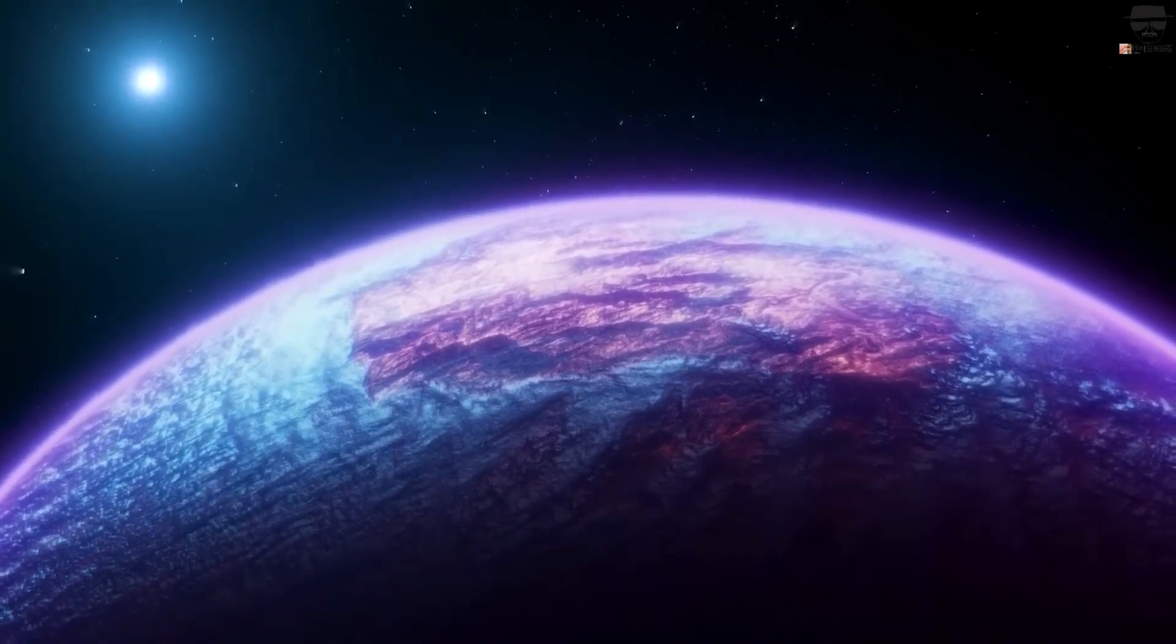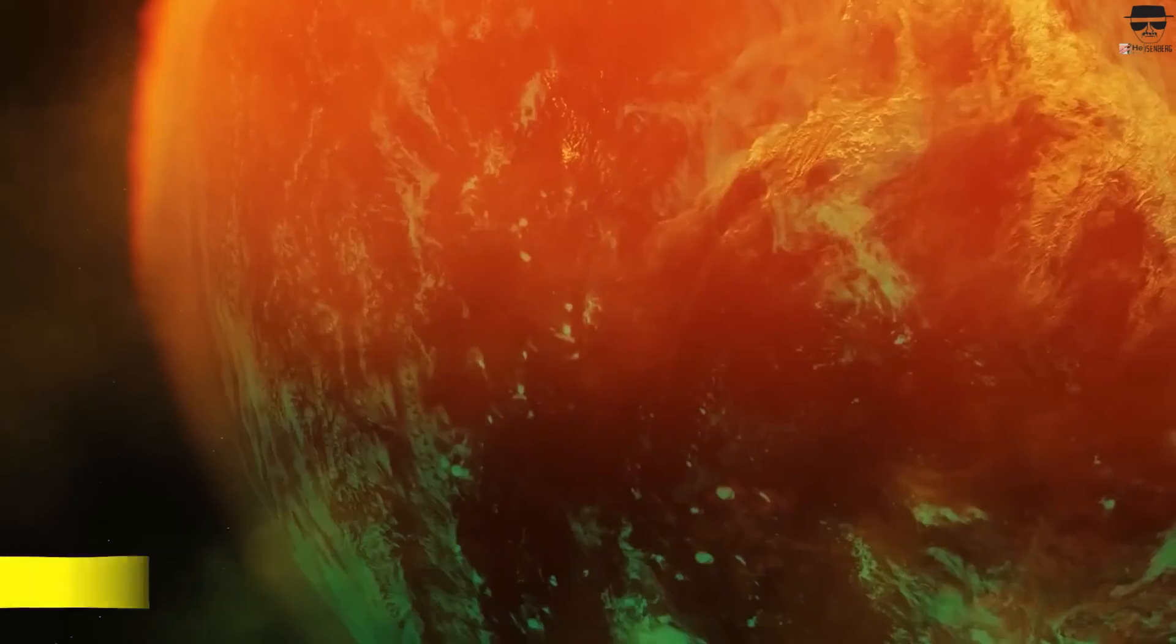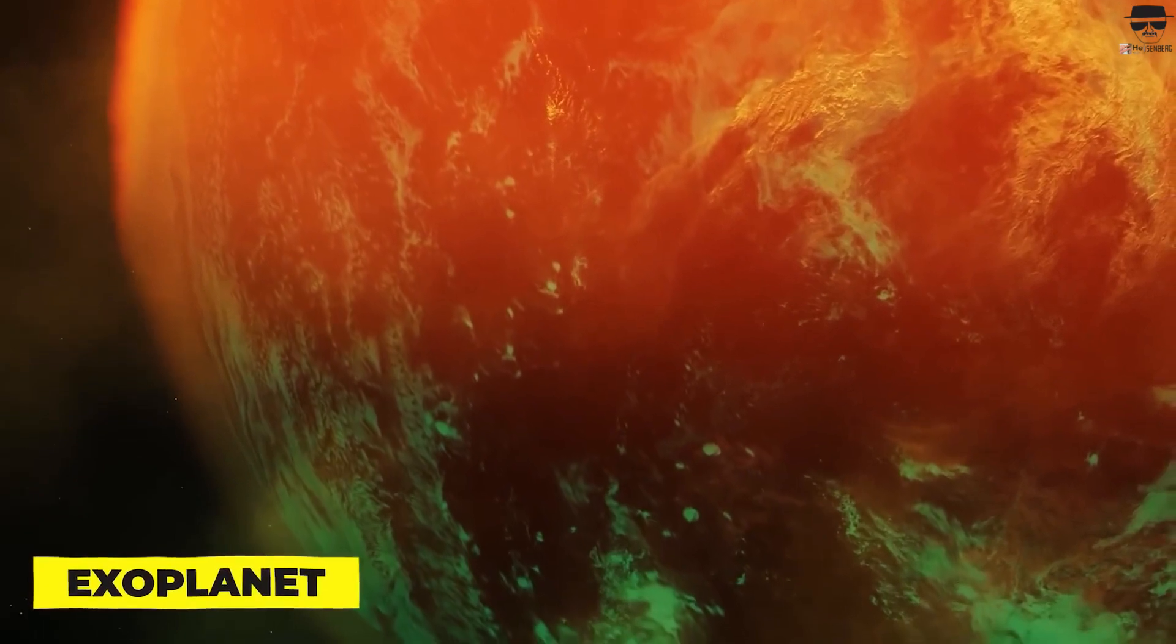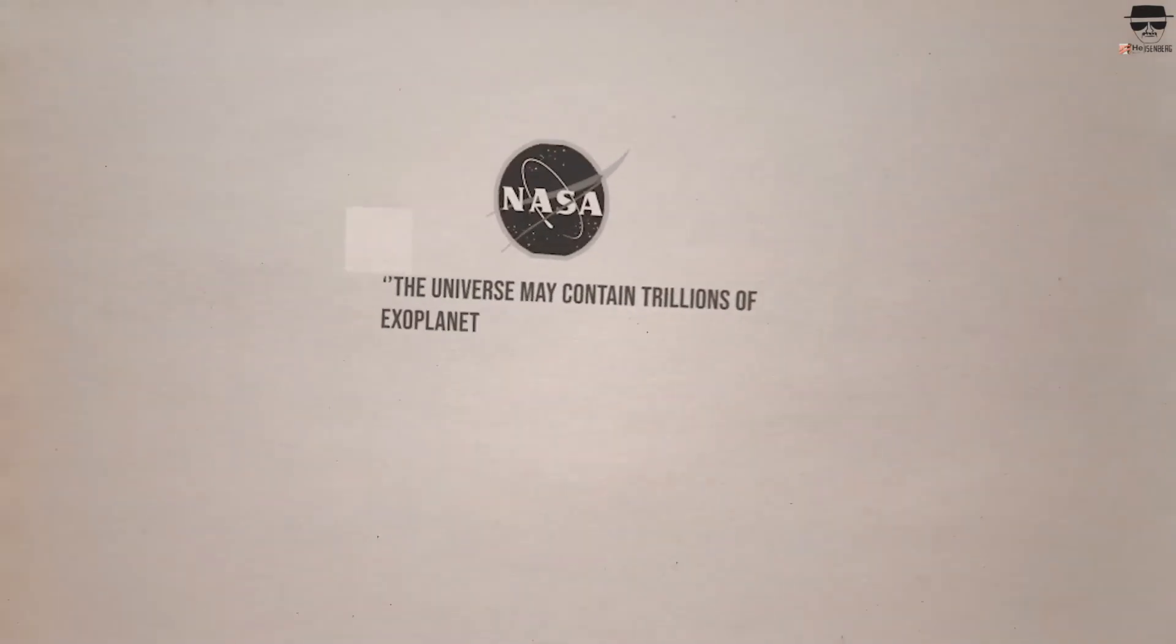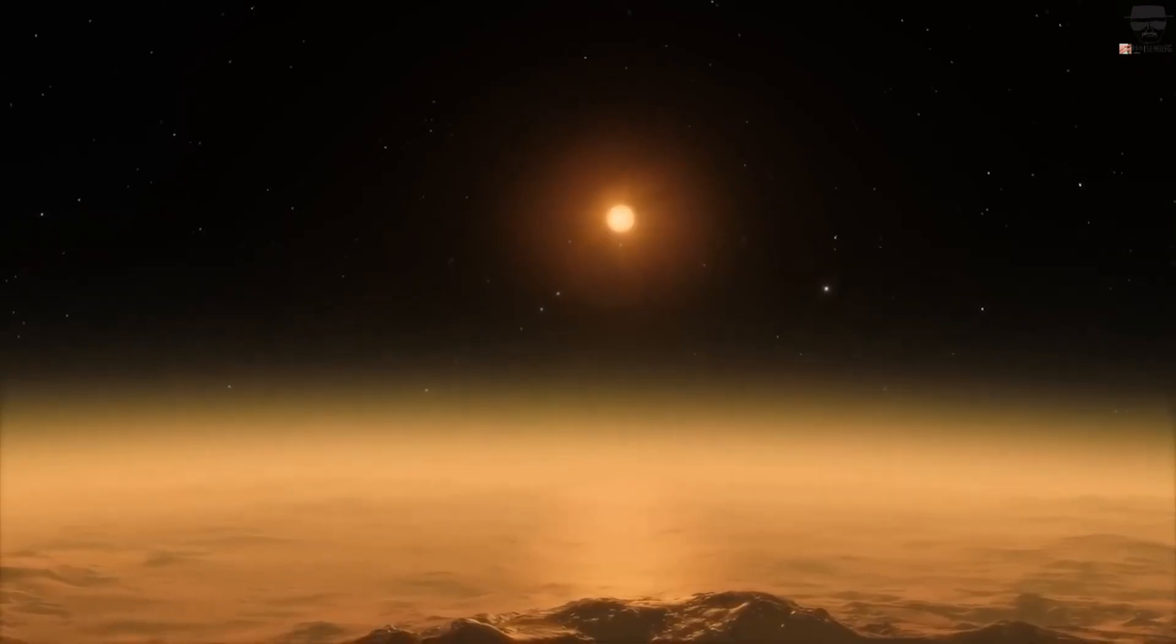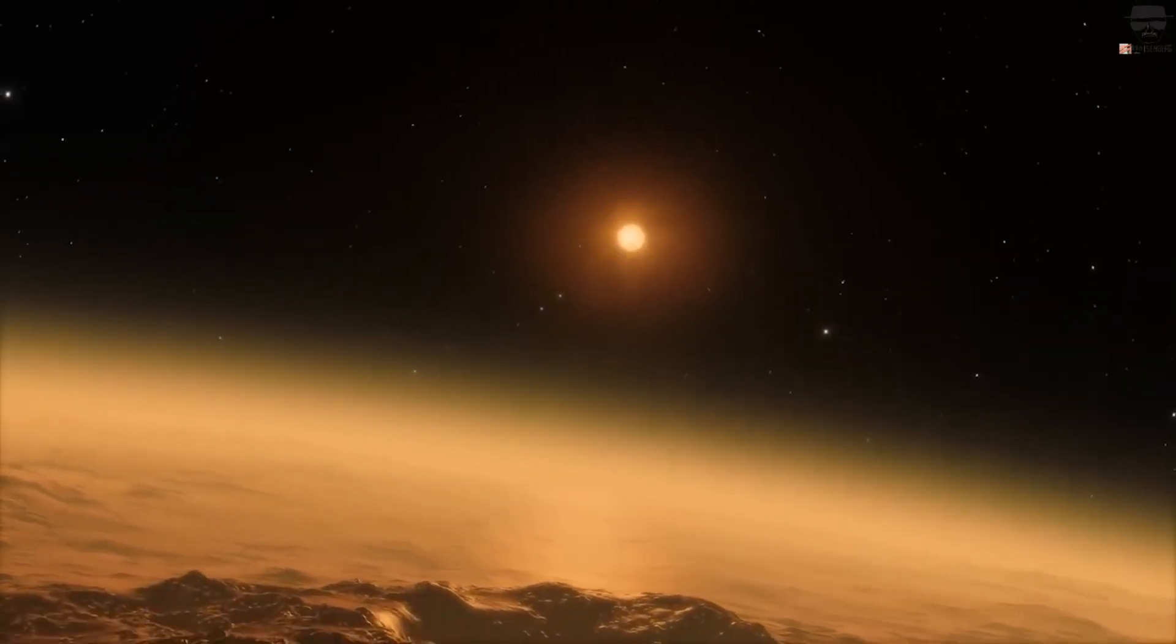But more than 4,000 more planets, sometimes known as exoplanets, have since been found orbiting other stars. According to NASA, there could be trillions of exoplanets in the universe. Extraterrestrial plant life may provide the earliest indications of life outside of our solar system.